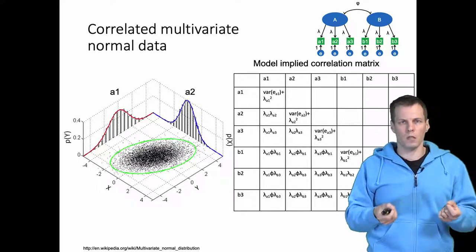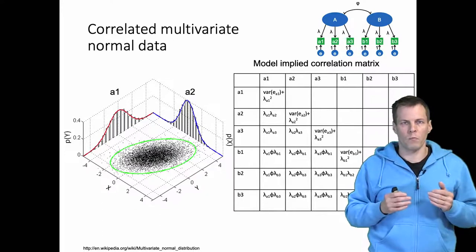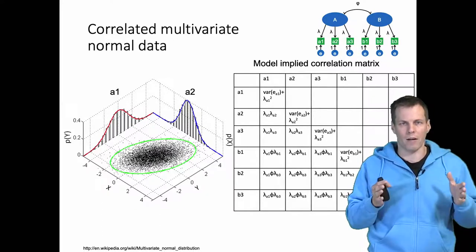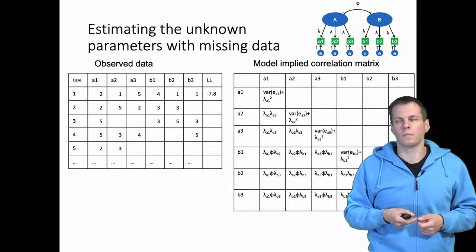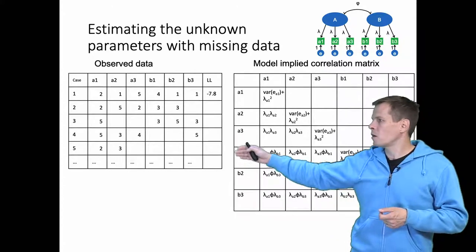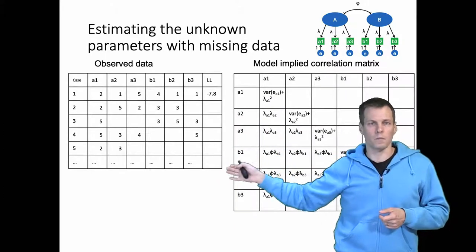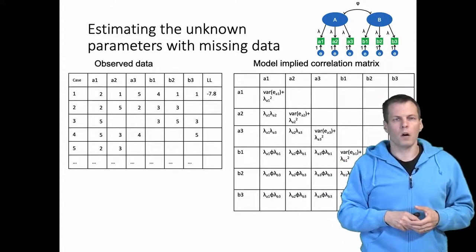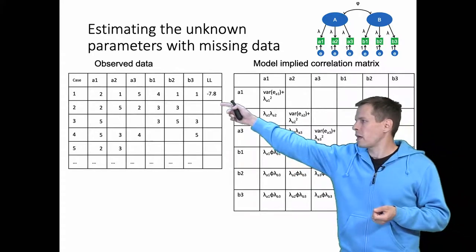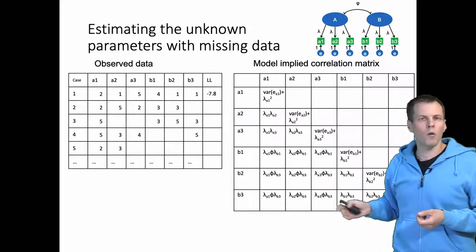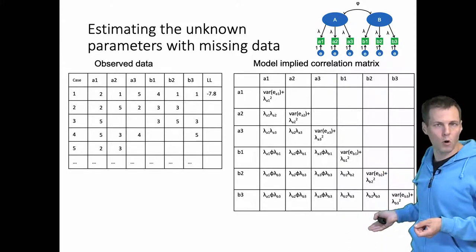Full information maximum likelihood proceeds by going observation by observation — or one missing data pattern at a time — and calculating individual likelihoods. With our example dataset, we have no missingness for the first case and different patterns for each of the first five cases. For the first observation, we look at six values: A1, A2, A3, B1, B2, and B3.